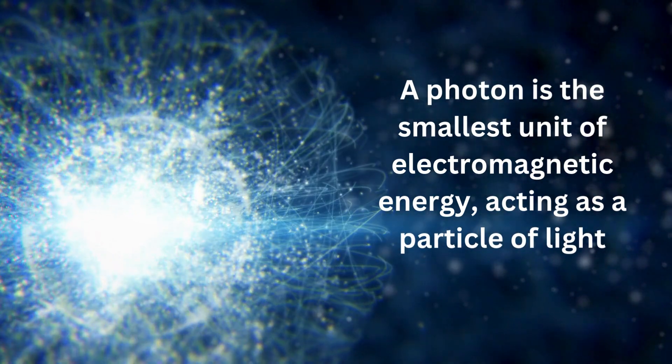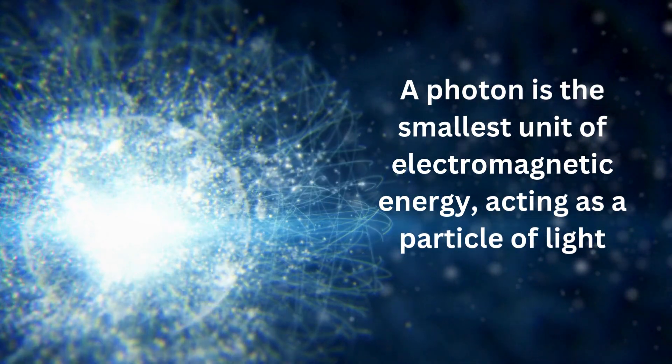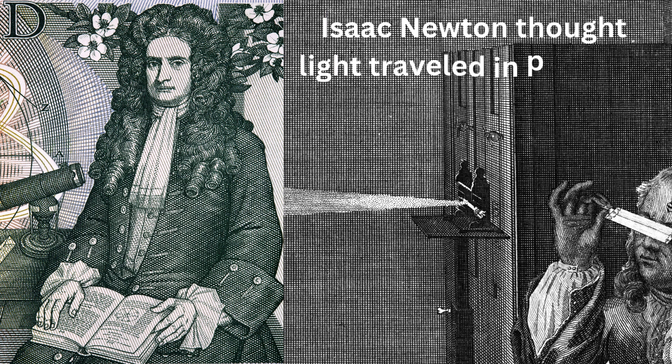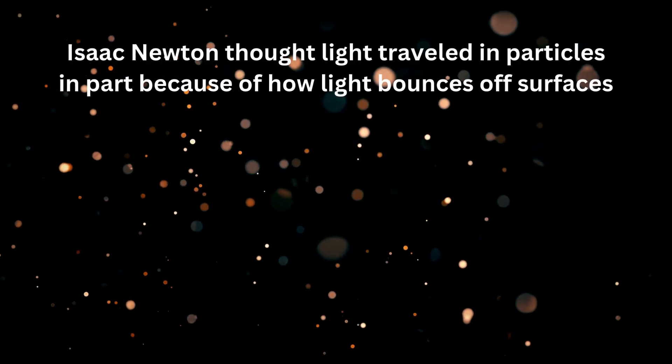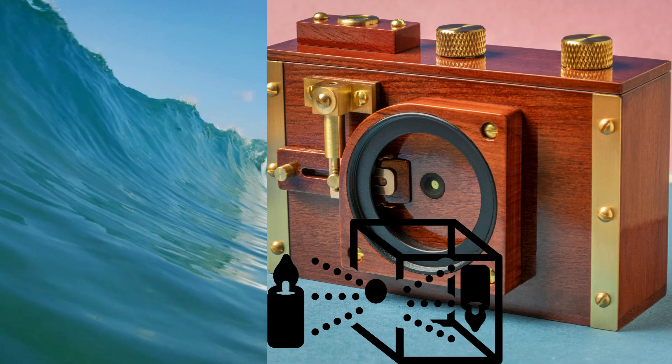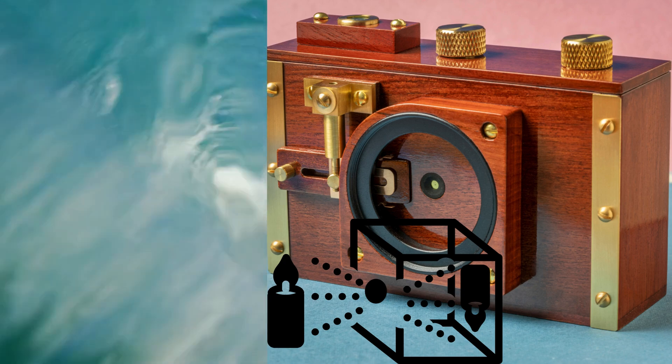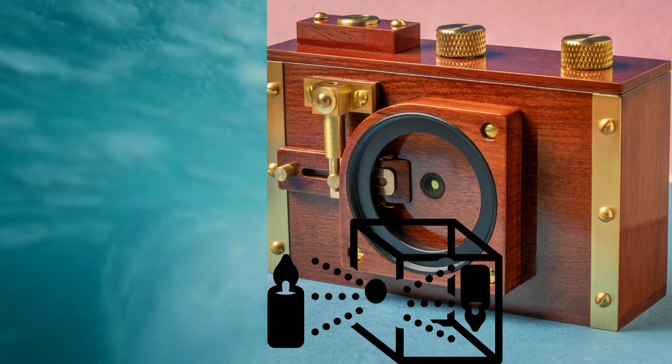Scientists' discovery that photons are both waves and particles was a key part of the development of quantum mechanics. Isaac Newton thought light traveled in particles in part because of how light bounces off surfaces. But Christian Huygens pointed out that light shined through a small hole spread out instead of remaining a spot. This meant that light must be a wave, with light spreading out in a way similar to how water ripples.